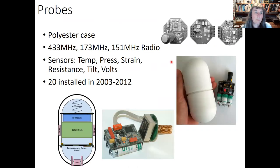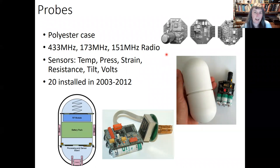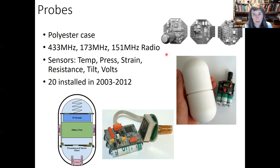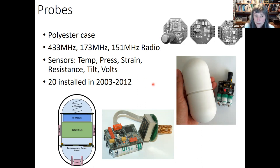The probes are encased in a polyester case. When we started we used 433 megahertz, but we were able to go down in frequency as technology improved and miniaturization progressed, and as we went down in frequency we got better penetration. What we measured was temperature, pressure, strain, resistance, tilt, and voltage. We essentially installed 20 probes between 2003 and 2012, and each iteration of the system got slightly better.